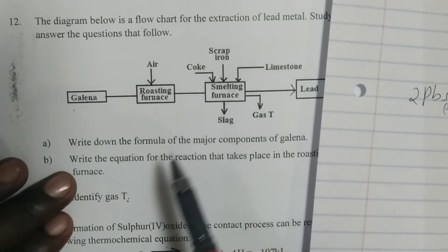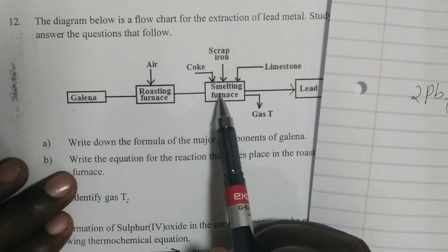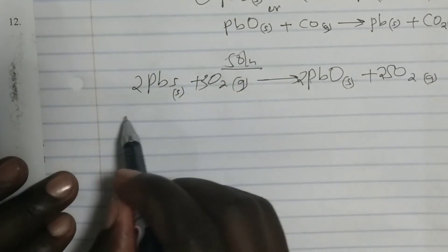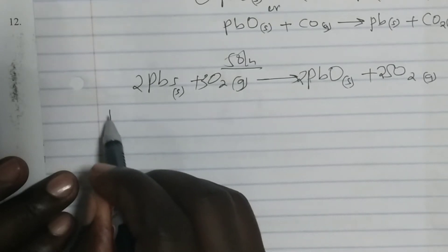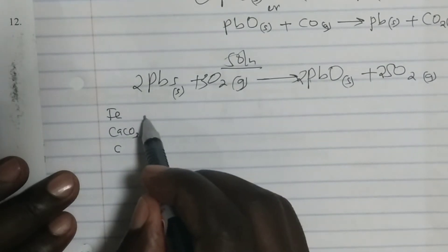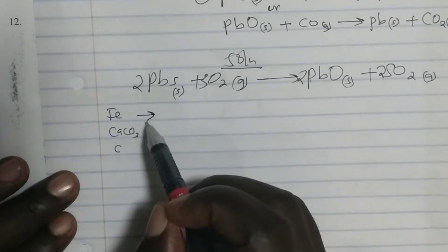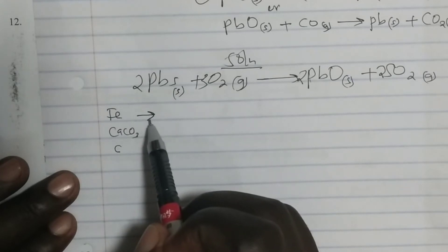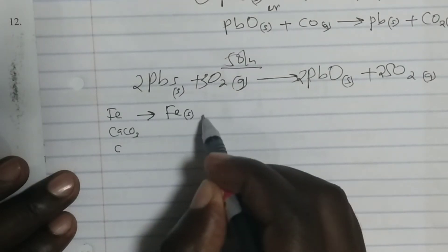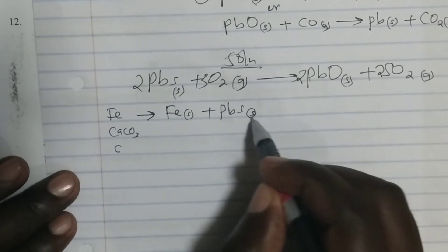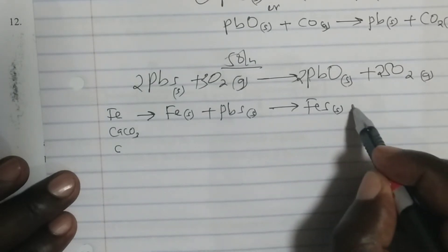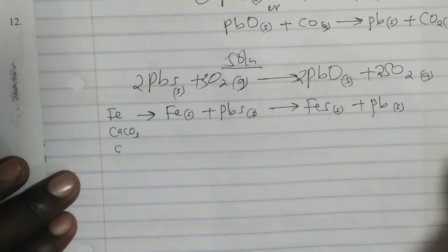From the roasting furnace, we take the lead-2-oxide into the smelting furnace, where coke is added. We also have iron and limestone — these are the three materials added. The purpose of iron is to remove or reduce any unreacted lead sulfide. Iron metal reacts with lead sulfide; iron takes the sulfur so that we have iron-2-sulfide, which is a solid, plus lead metal, which is also a solid.